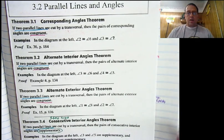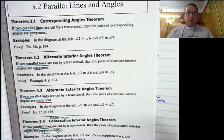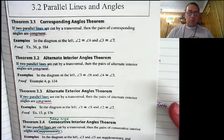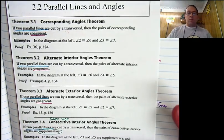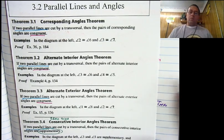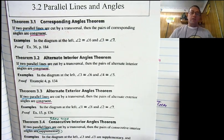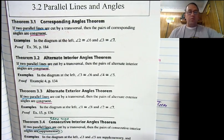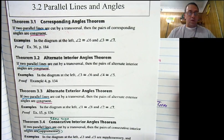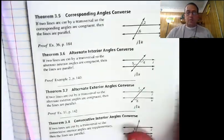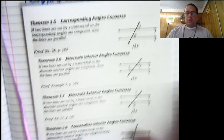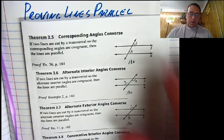And so the question becomes, what if they're not? What if I want to use the corresponding angles theorem, but I don't know if my lines are parallel? So what we need is a way to prove that these lines are parallel so that we can use our theorem. And that's what we're going to talk about today.